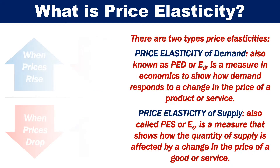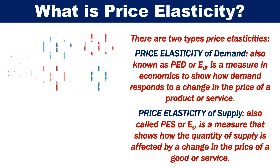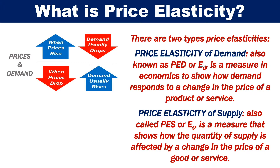There are two types of price elasticities. Price elasticity of demand, known as PED, is a measure in economics to show how demand responds to a change in the price of a product or service. When prices rise, demand drops. And when prices drop, demand usually rises.